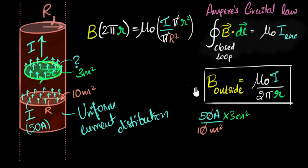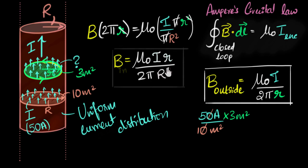Now if I rearrange, I'll get my expression. So the magnetic field inside turns out to be mu naught i R squared. Oh, one R cancels as well. You just get one r divided by 2 pi R squared.